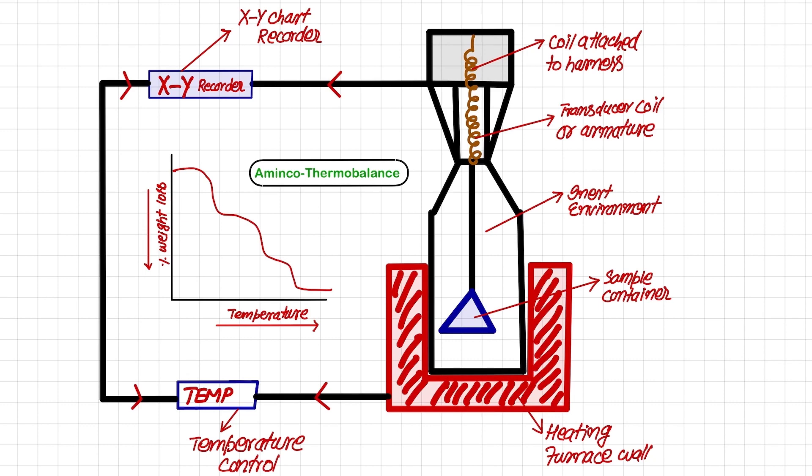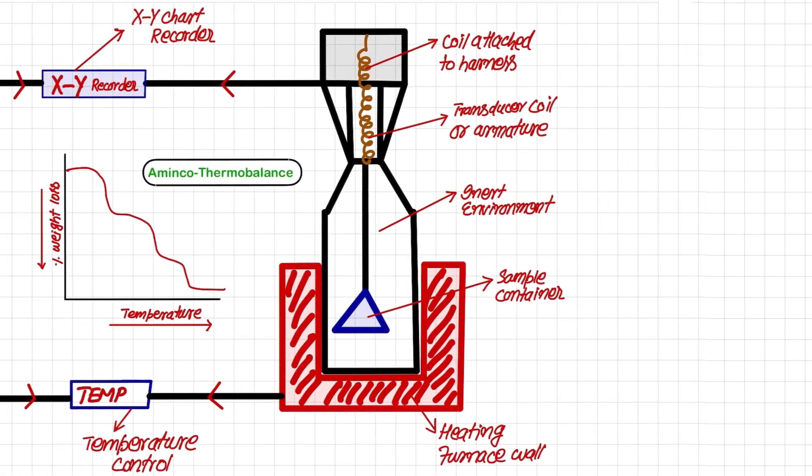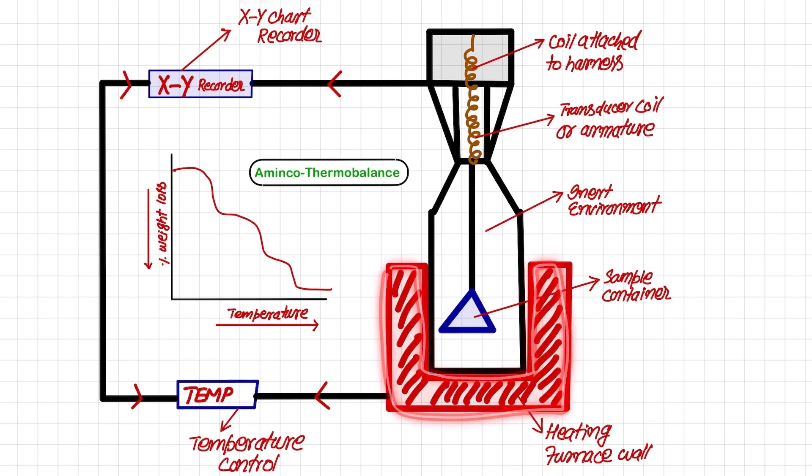These two types of information are then compiled in the form of a graph, and this graph is called a thermogram. As the heating furnace starts heating the sample, there is normally a reduction in weight. Due to the weight reduction, the spring moves upwards and when it moves upwards, a corresponding current is produced. That current is fed to the XY chart recorder and similarly at that instant, the information at that weight change is provided to the XY chart recorder through this temperature control, and then a corresponding thermogram is produced.